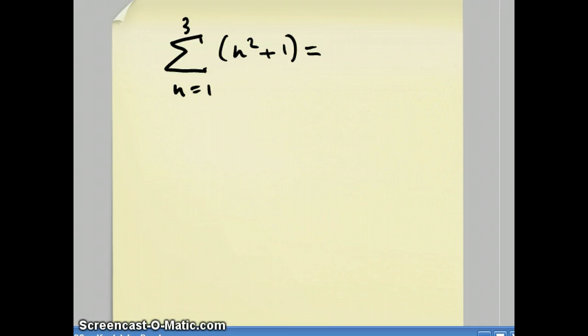What this means is that you start by plugging in for n this value that's down here, and you plug it in, you get 1 squared plus 1, which is 2. Then what you do is you increase the n by 1, it becomes 2. You plug that into the equation, so it becomes 2 squared plus 1, which is 5, and you add that answer to what you already have. And then finally, you put in 3. Now, you're going to stop at 3 because this top number tells you when you should stop. So you plug 3, and you get 3 squared plus 1, which is 9 plus 1, which is 10. Then you add the three numbers together, and you get your answer.